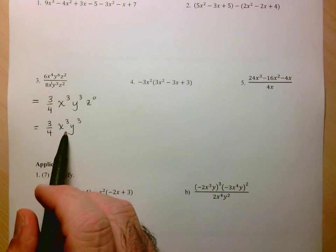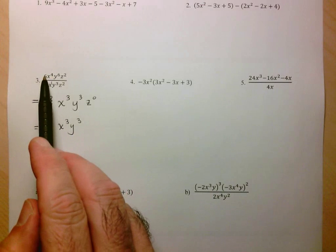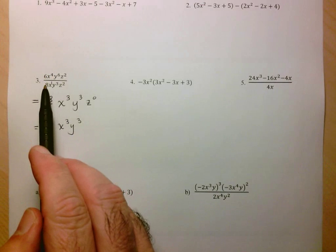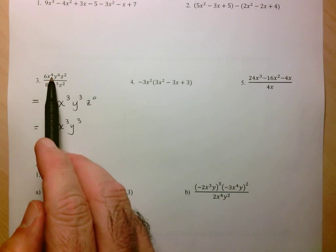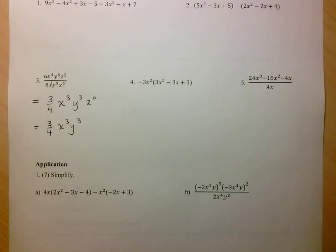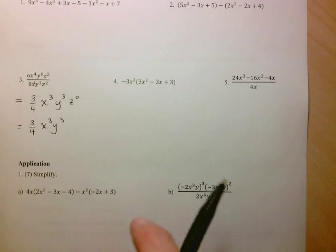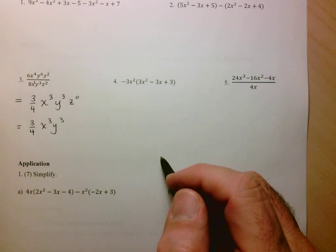Just to recap: to divide monomials, you divide the coefficients and then you divide the powers with the same base. Let's move on now to knowledge and understanding number 5.